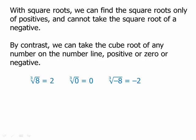For example, the cube root of 8 is 2, the cube root of 0 is 0, and the cube root of negative 8 is negative 2. So unlike the square root, the cube root can have a negative output — when we put in a negative, we get out a negative.